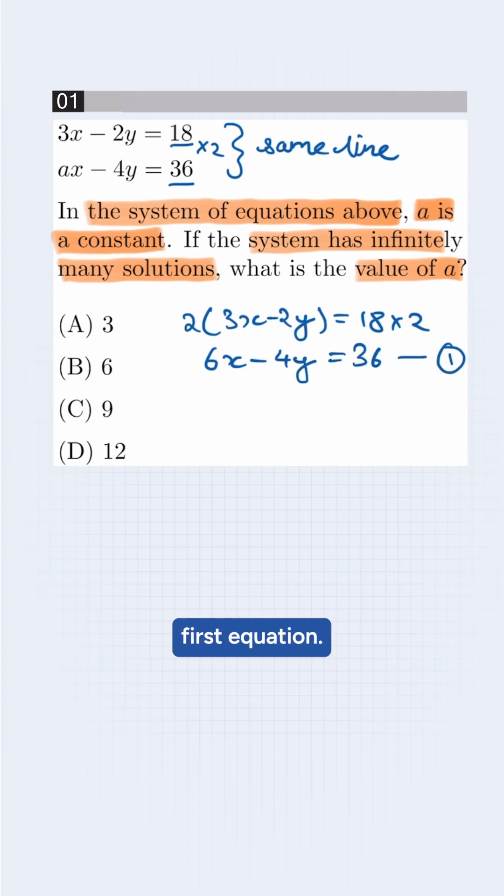It will be our new first equation. And the second equation is Ax minus 4y is equal to 36.